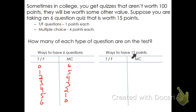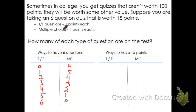Here's the kicker — they also have to total 15 points. So let's figure out ways to have 15 total points. You might think: if true-false questions are one point each, we could just have 15 true-falses and zero multiple-choices.